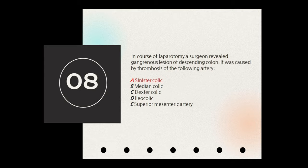The artery supplying the descending colon must be the one that is thrombosed. To understand this, we need to cover the blood supply of the large intestine. The GI tract is divided into foregut, midgut, and hindgut. The foregut and small intestine are supplied by the celiac artery. The midgut — from the ileocecal junction to the proximal two-thirds of the transverse colon — is supplied by branches of the superior mesenteric artery. The hindgut — from the remaining transverse colon to the sigmoid colon — is supplied by the inferior mesenteric artery.